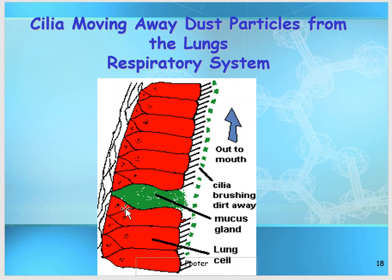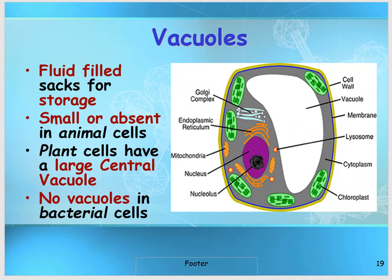One place we find cilia in our body is the ciliated epithelium — the inner lining of our airway in the trachea. You can see cilia attached here; they help spread mucus and wash away dust or particles that happen to enter.